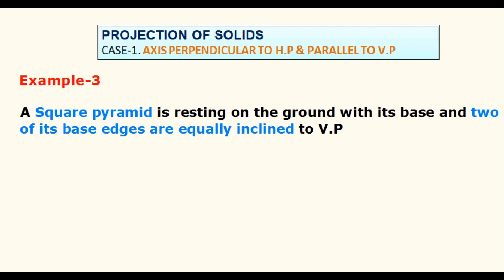In the third example, a square pyramid is resting on the ground with its base and two of its base edges are equally inclined to V.P.